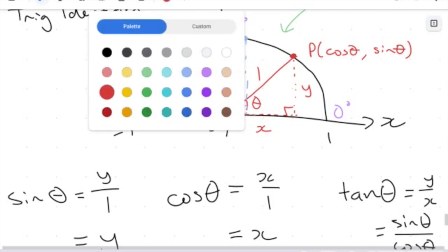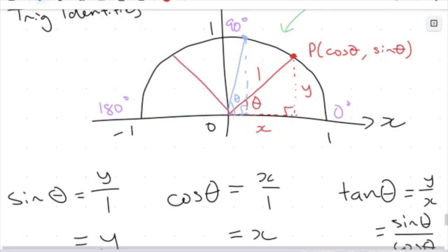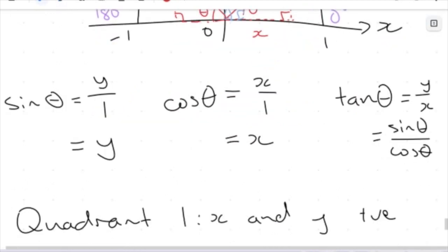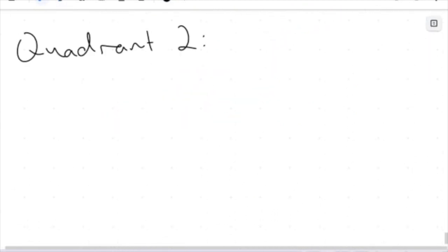Let's say we took an obtuse angle somewhere here in quadrant 2. I can construct a right angle triangle in the same way. We want to see what happens — what is the identity of my sin, cos, and tan in this portion here. So let's write down sin theta, cos theta, and tan theta and look at what they're doing in this particular quadrant.